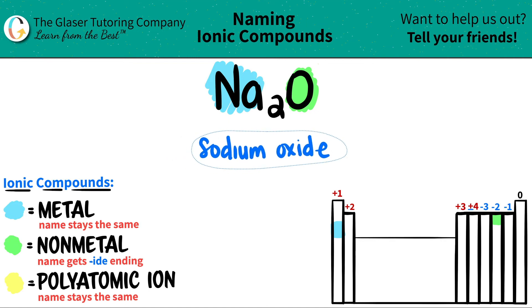Now, all you have to do is just make sure that your metal, which is sodium, is not a transition metal. Transition metals are the ones that get the Roman numeral. But since sodium is not in this little block over here, we don't need a Roman numeral. So we're good.